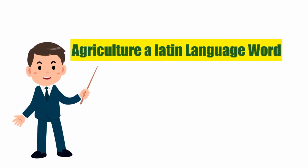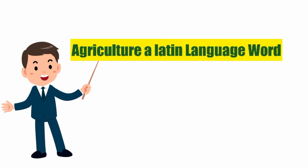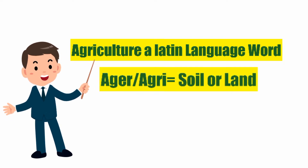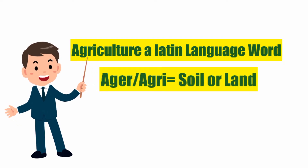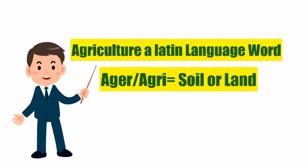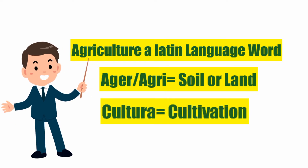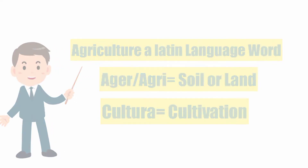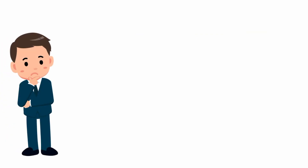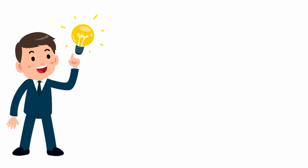The word 'agriculture' is taken from Latin. It is a combination of two Latin words: 'ager' and 'cultura'. The word 'ager' means soil or land, and 'cultura' means cultivation.